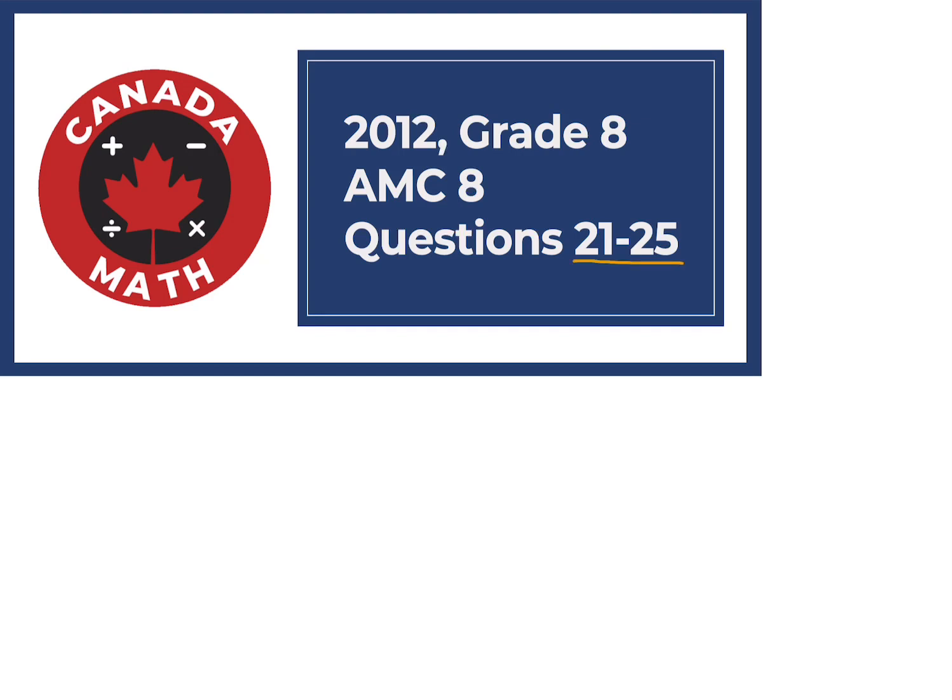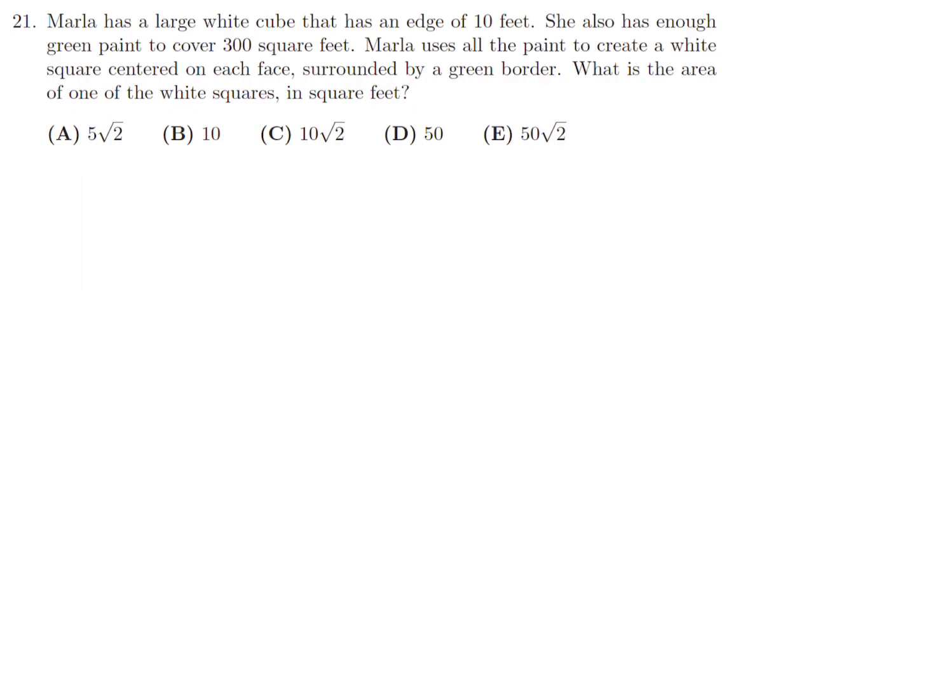Questions 21 through 25 on the 2012 grade 8 AMC 8. Marla has a large white cube that has an edge of 10 feet. She also has enough green paint to cover 300 square feet. Marla uses all the paint to create a white square centered on each face surrounded by a green border. What is the area of one of these white squares in square feet?